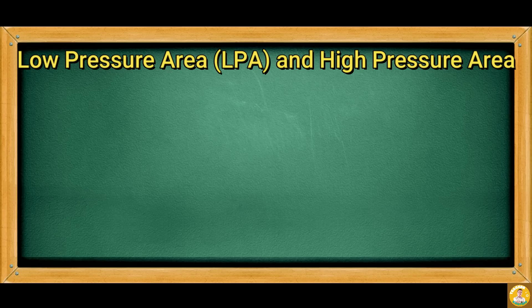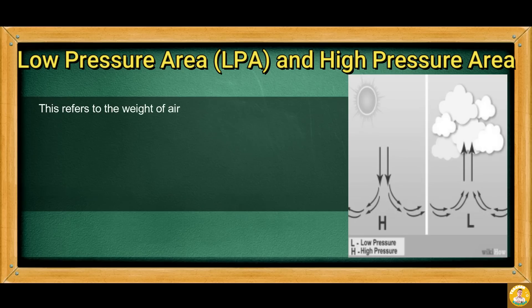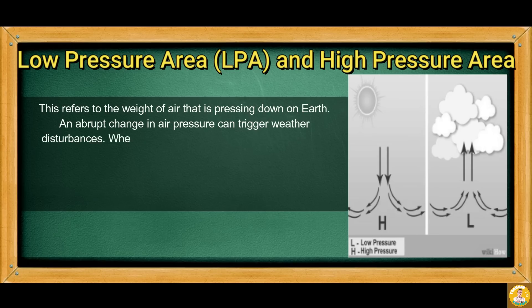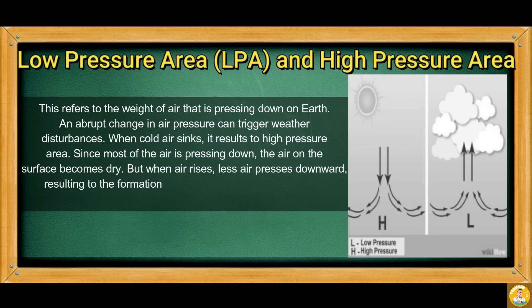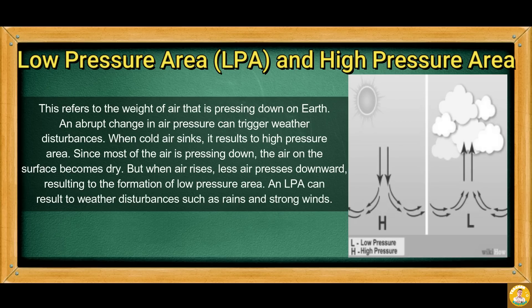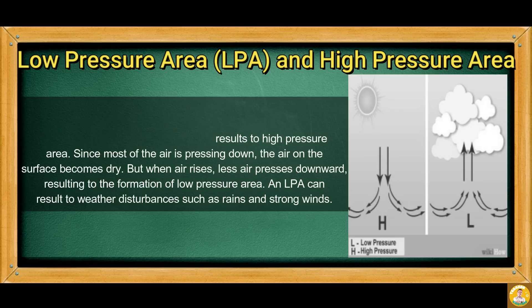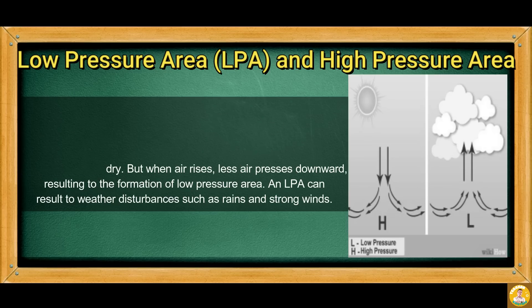Low pressure area, or LPA, and high pressure area refer to the weight of air pressing down on Earth. An abrupt change in air pressure can trigger weather disturbances. When cold air sinks, it results in a high pressure area. Since most of the air is pressing down, the air on the surface becomes dry. But when air rises, less air presses downward, resulting in the formation of a low pressure area. An LPA can result in weather disturbances such as rains and strong winds.